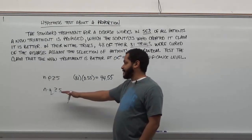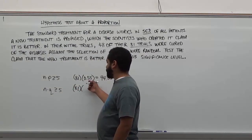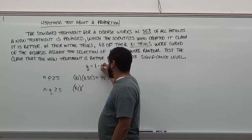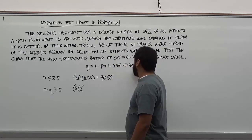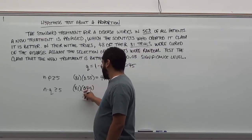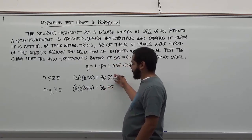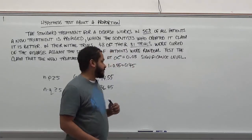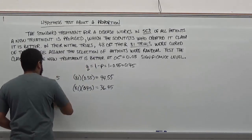We also check n times q. Q is 1 minus p, so 1 minus 0.55 equals 0.45. Then 81 times 0.45 equals 36.45, which is also greater than or equal to 5. This satisfies both conditions, which means we can run the hypothesis test for the true proportions.